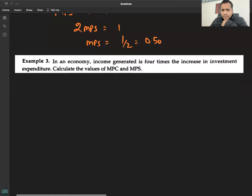In an economy, income generated is four times the increase in investment. Calculate the value of MPC and MPS.